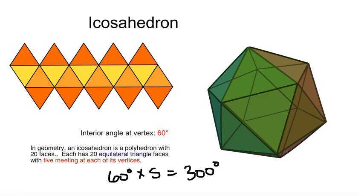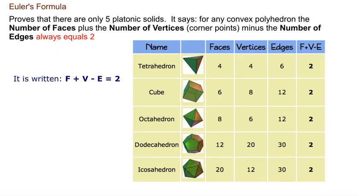Now there's another way in which to find out if they are indeed Platonic shapes. You can use Euler's formula. It proves that there are only five Platonic solids. It says, it states, for any convex polyhedron, the number of faces plus the number of vertices minus the number of edges always equals two. So this is nicely organized in this chart. Face plus vertice minus edges equals two. And this works for each one of these solids. Six plus eight minus 12 gives you two.